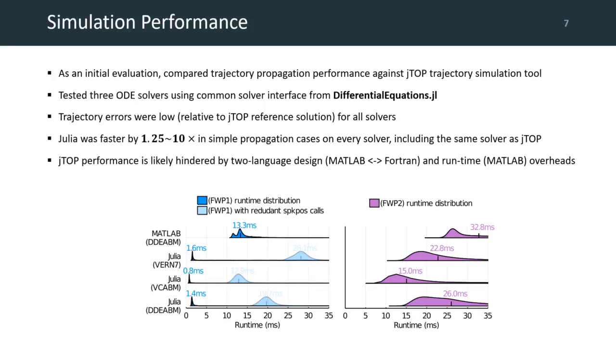I compared the performance of my automatically generated simulators against an in-house astrodynamics tool at JAXA called JTOP, which has a Fortran core for simulation sitting behind a user-level MATLAB library. Now, not only did all the Julia solvers provide highly accurate solutions compared to the reference trajectories, they were also computed up to 10 times faster in every case, even when comparing with the same solver used by JTOP. This massive performance benefit is probably because Julia avoids the overheads of a two-language design.